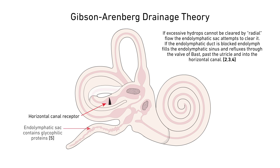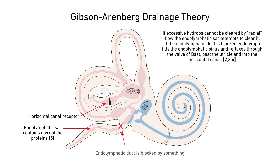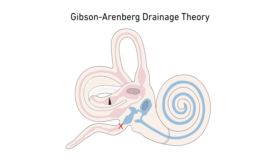The sac contains hydrophilic glycoproteins. Endolymph from the cochlea moves towards the sac. It may clear it, but if the endolymphatic duct is in some way blocked, endolymph fills the endolymphatic sinus. If the sac still cannot clear it, endolymph refluxes through the valve of Bast and past the utricle into the horizontal canal ampulla.